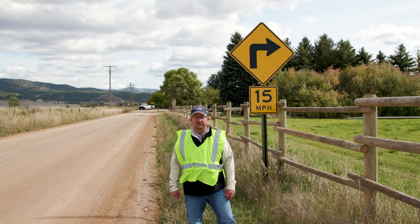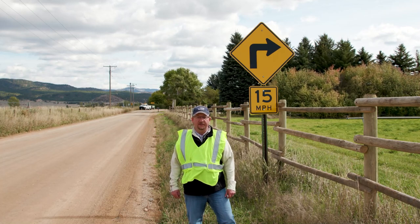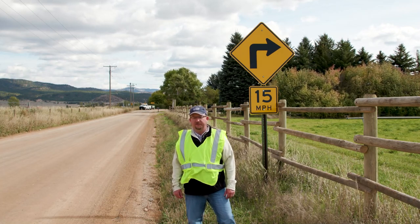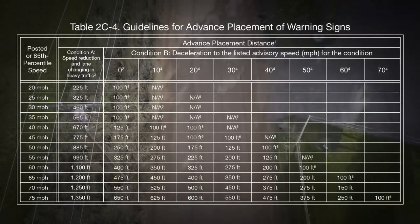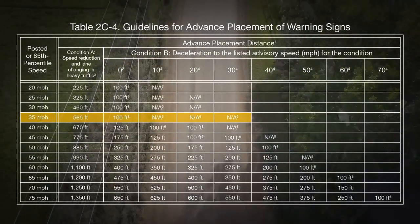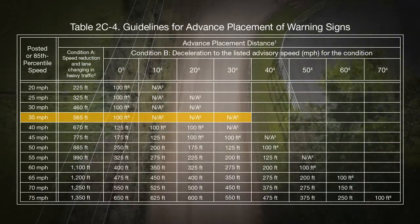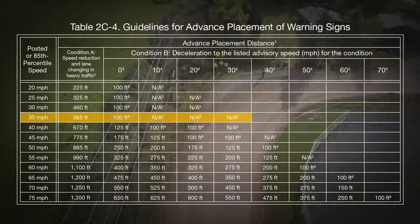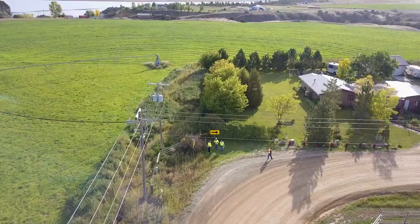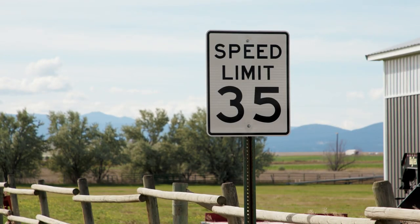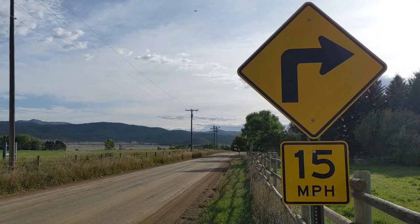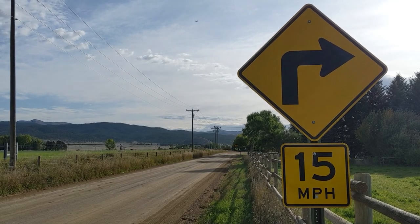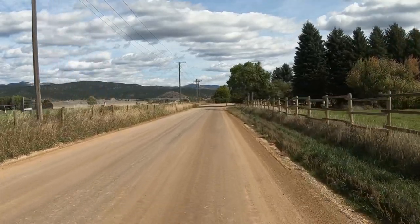Prior to installation of Chevrons on a curve, a speed study should be completed to determine the operational speed that is safe for that curve. Use the Manual on Uniform Traffic Control Devices, or MUTCD, guidelines for advanced placement of warning signs table to determine the distance from the PC to the sign, or to verify an existing sign is in the correct location. In this case, the roadway has a posted speed limit of 35 miles per hour, so the sign should be placed up to 100 feet in advance of the PC, depending on site conditions and other signing.